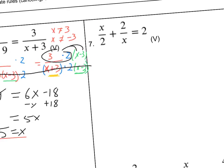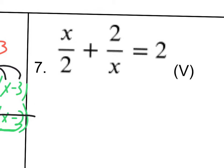The other video problem is number 7. Here we've got X over 2 plus 2 over X is equal to 2. I'm going to turn the 2 on the right into 2 over 1 just so I recognize it as a fraction. Nothing to factor here, which is nice. I've got one excluded value: X cannot be 0. I'm going to multiply the first term by X over X, and the last term by X over X as well, and the middle term needs times 2.